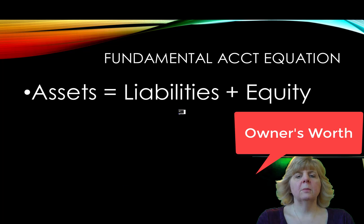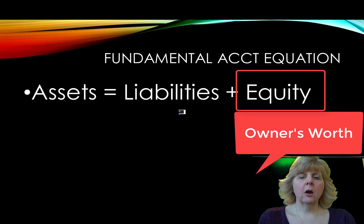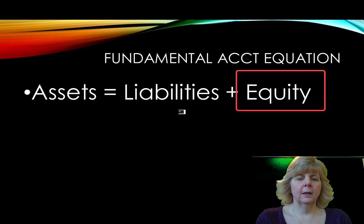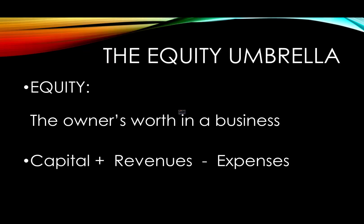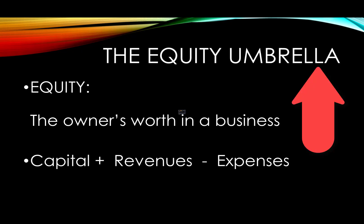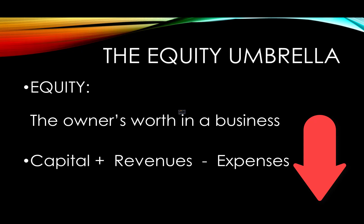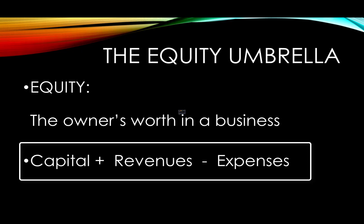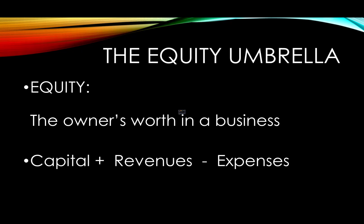The third component in the fundamental accounting equation is equity. Equity is the owner's worth, or what the owner has left after the creditors are paid off. Think about an umbrella that goes up and down — there are certain parts of the equity equation that bring equity up and other things which bring equity down. The equity umbrella can expand to say that capital plus revenues minus expenses will equal the owner's equity.